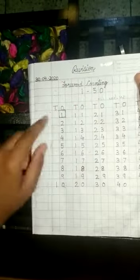Yesterday we have learnt forward counting 1 to 50 and we have learnt how to write 1 to 50 counting in the place of 1's and 10's. We will do the same today.